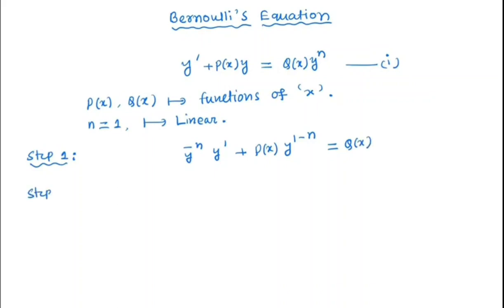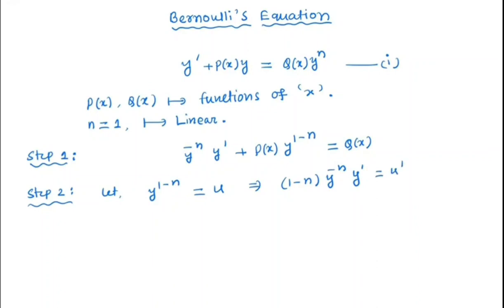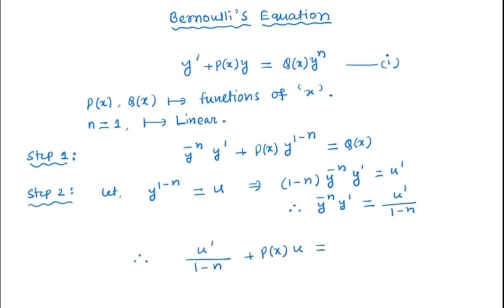Step 2: Let y^(1−n) equal to u. That implies that (1−n) times y^(−n) times y prime equals u prime, if we differentiate both sides. So from here we get that y^(−n) times y prime equals u prime divided by (1−n). Substituting this value, we get u prime divided by (1−n) plus p(x) times u equal to q(x).